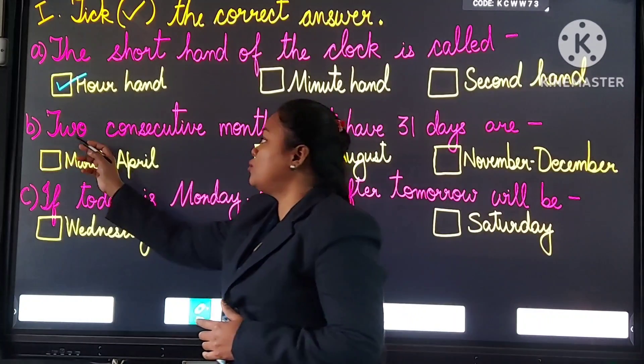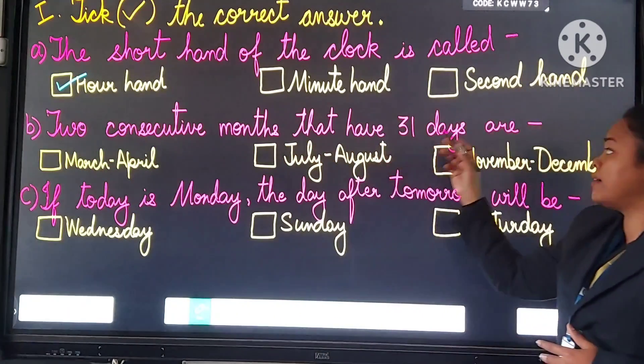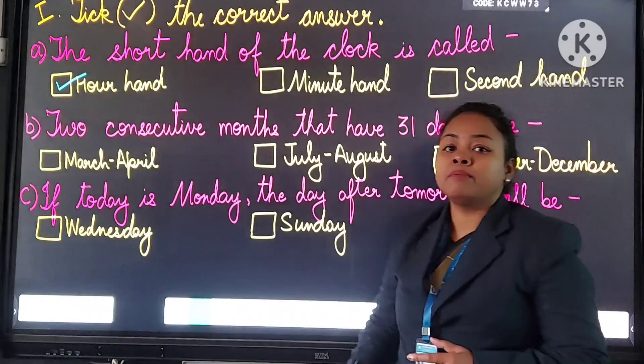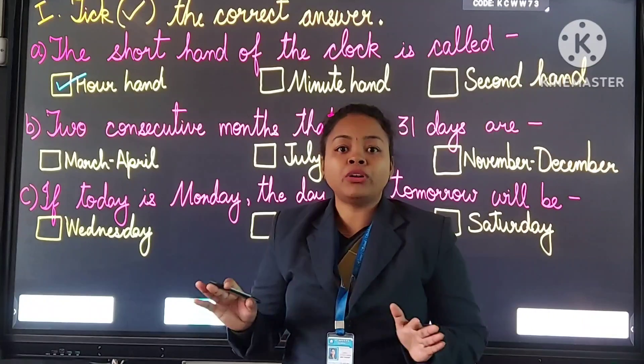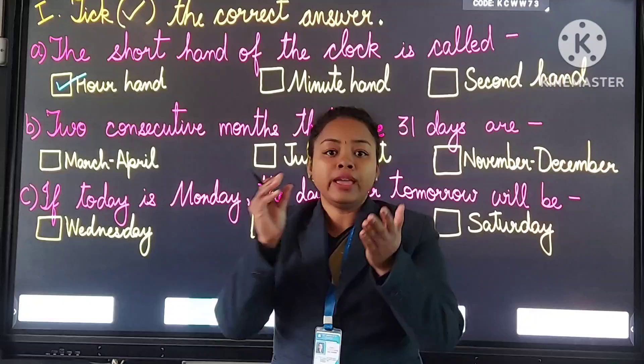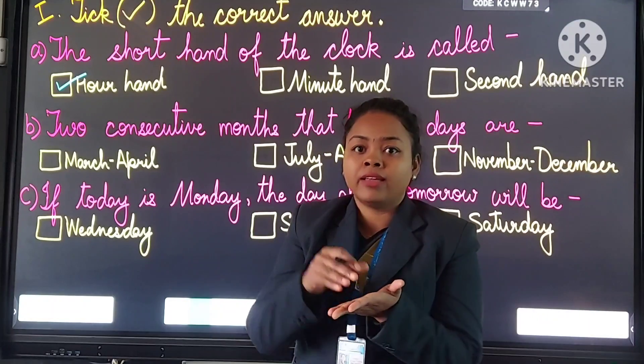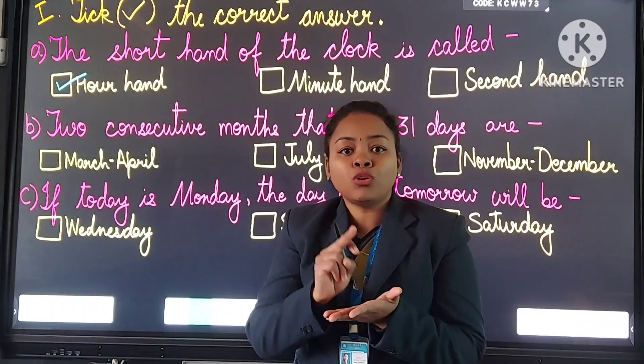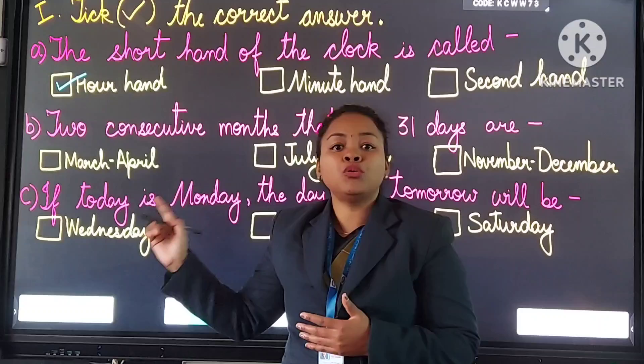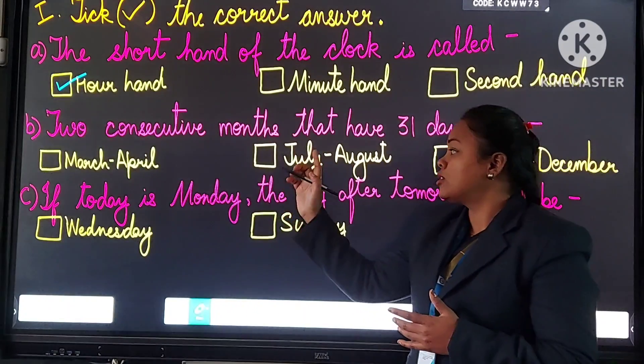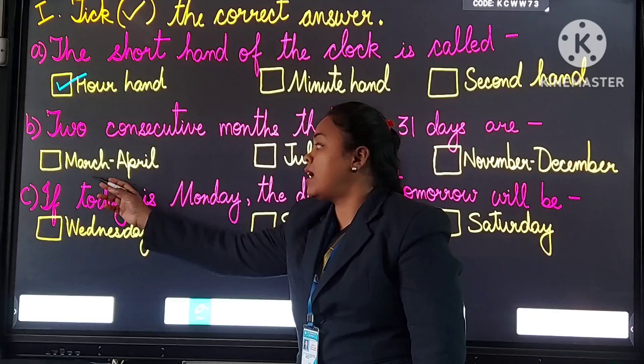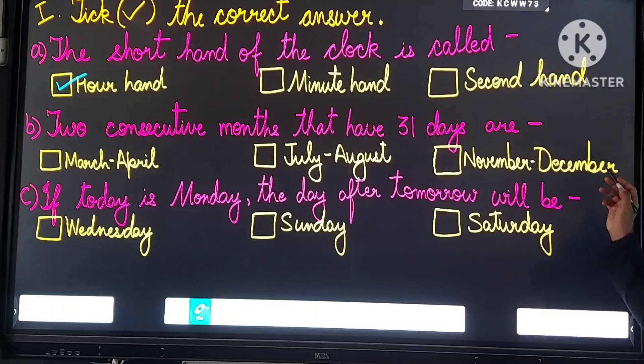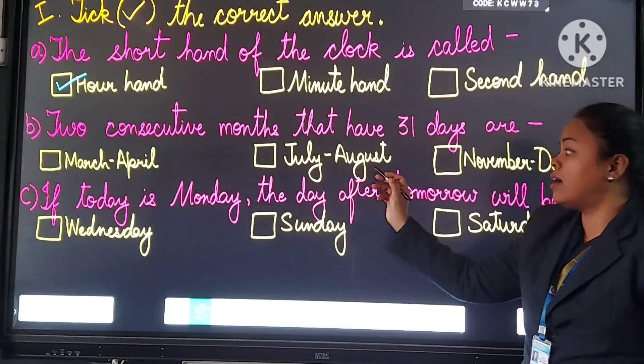Question number B. Two consecutive months that have 31 days are. Two consecutive months means following one another without interruption. Suppose ek mahine mein 31 days hai, then again next month mein bhi 31 days rehenge. Then those two months will be called two consecutive months. So here options are March-April, July-August, November-December. Answer is July-August.